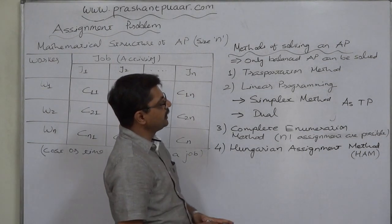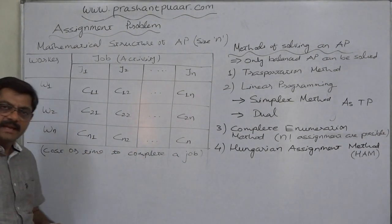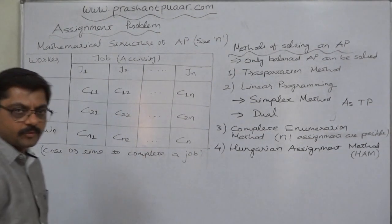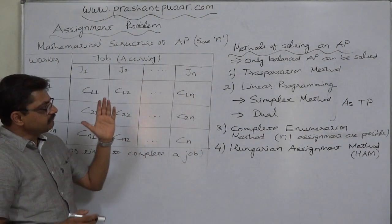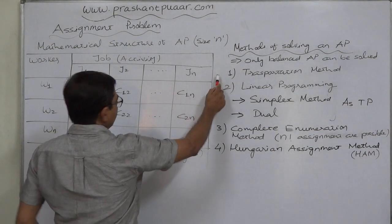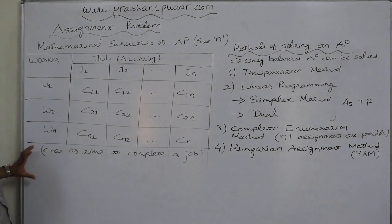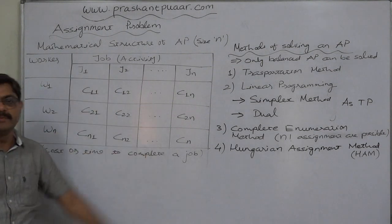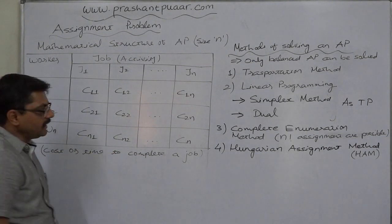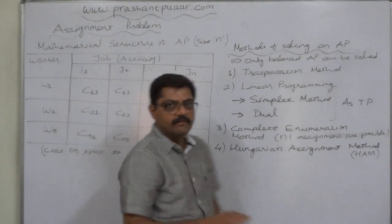The first method of solving an assignment problem is the transportation method — that is, consider the assignment problem as a transportation problem and solve it. To convert an AP into a transportation problem, we add a column of supply where each worker's supply is one, and a row of demand where each job's demand is one. So total supply equals total demand, each being one per row and column.